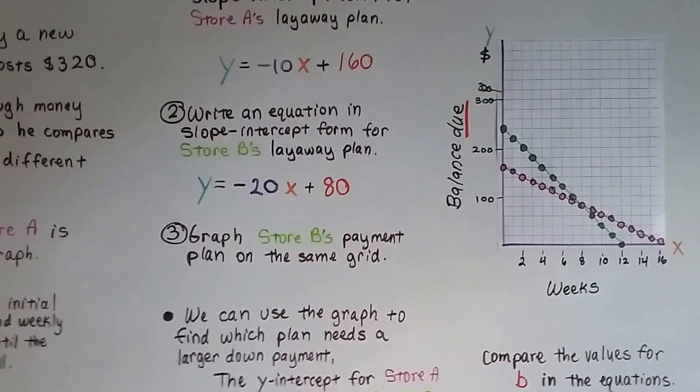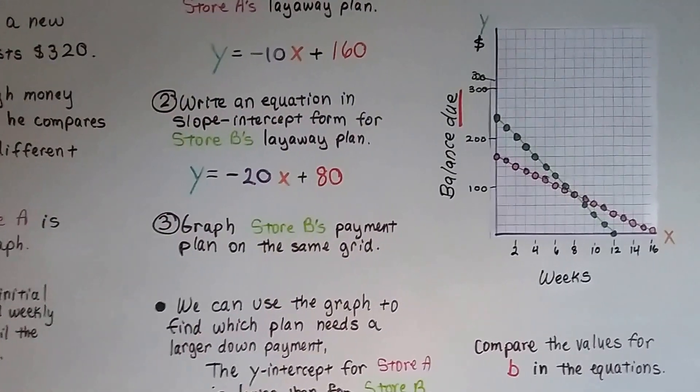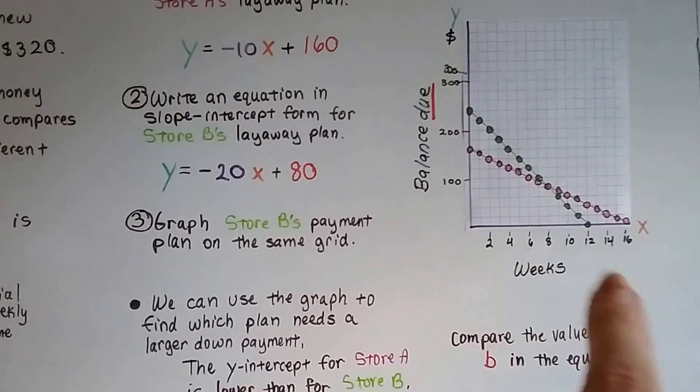Store B would probably be the best deal. It's a smaller down payment, and he gets the game quicker.